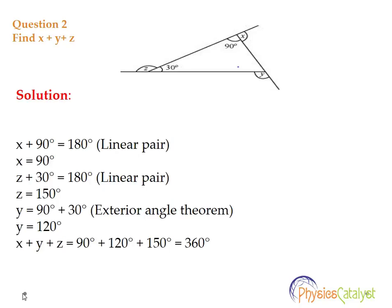So Y equals 30 plus 90, that is Y equals 120 degrees. We know the value of X, Y, Z: X equals 90, Y equals 120, Z equals 150.